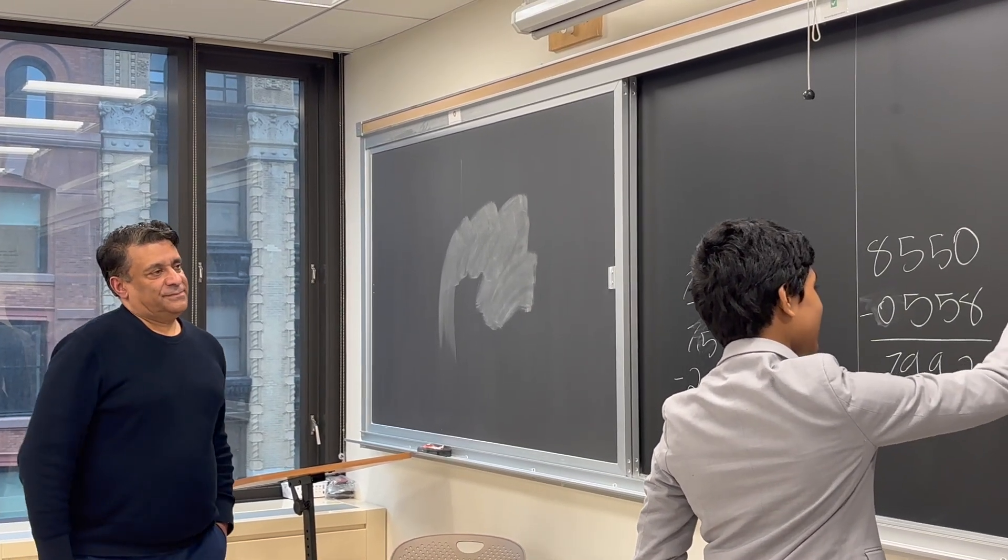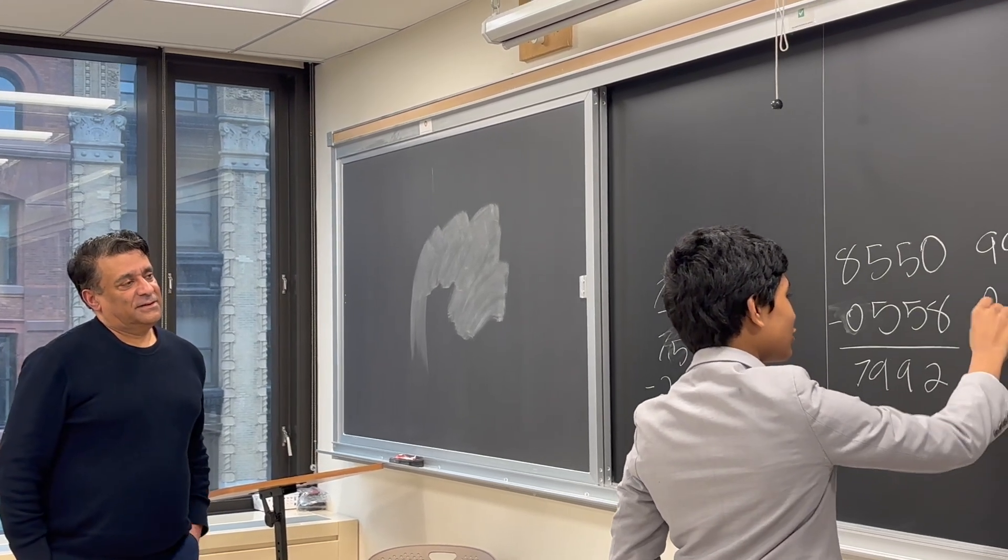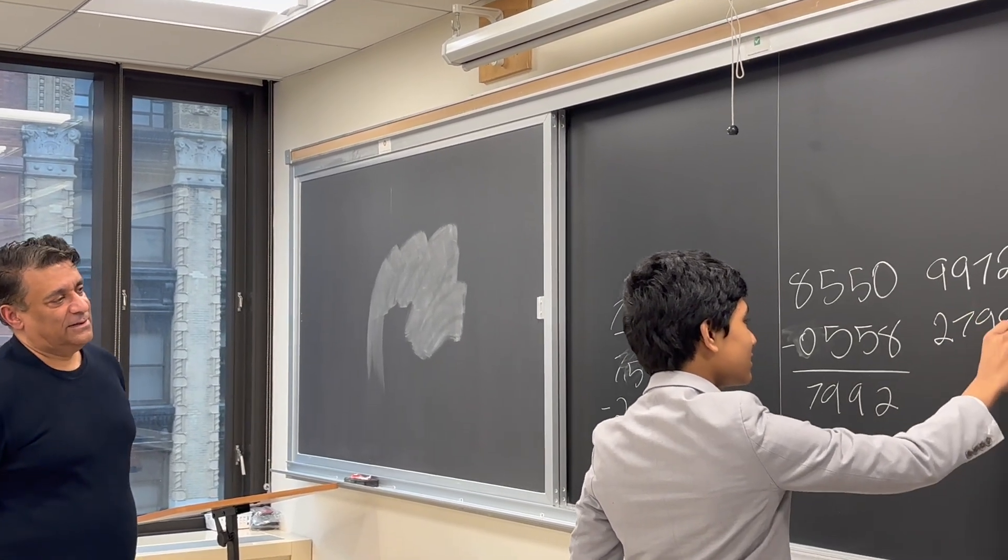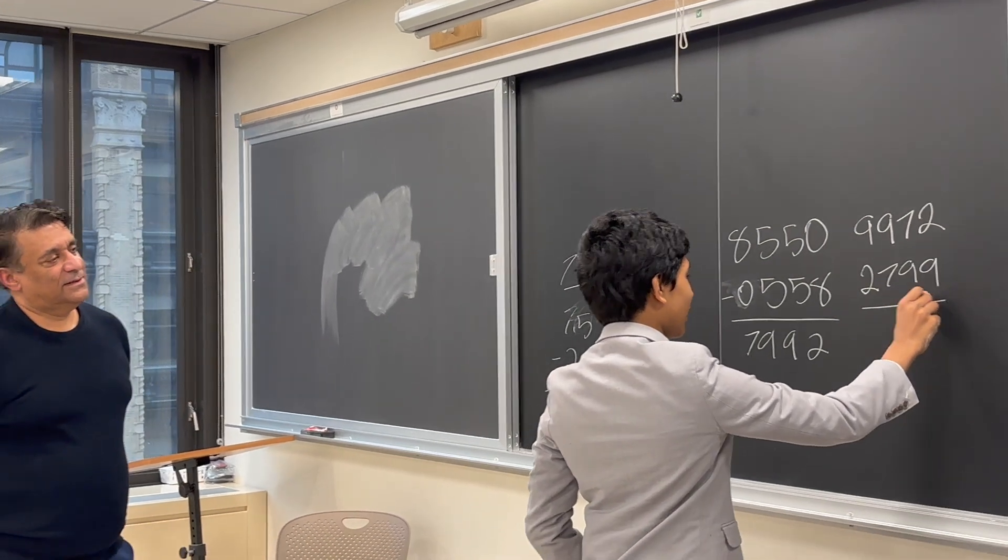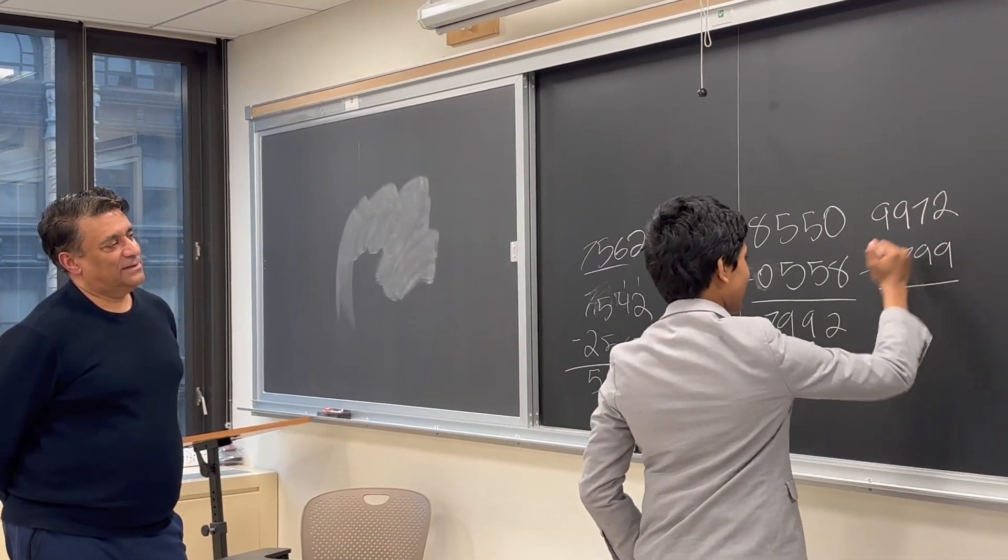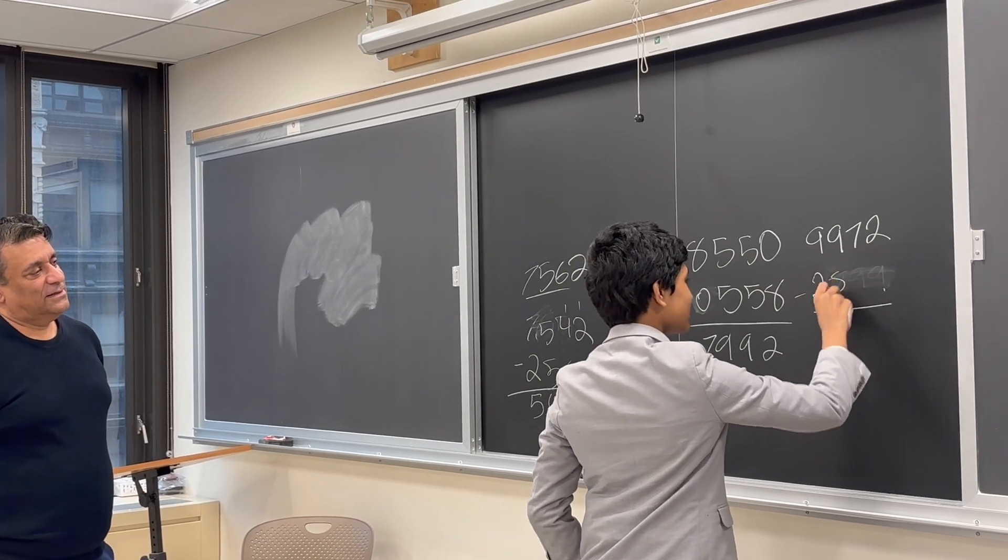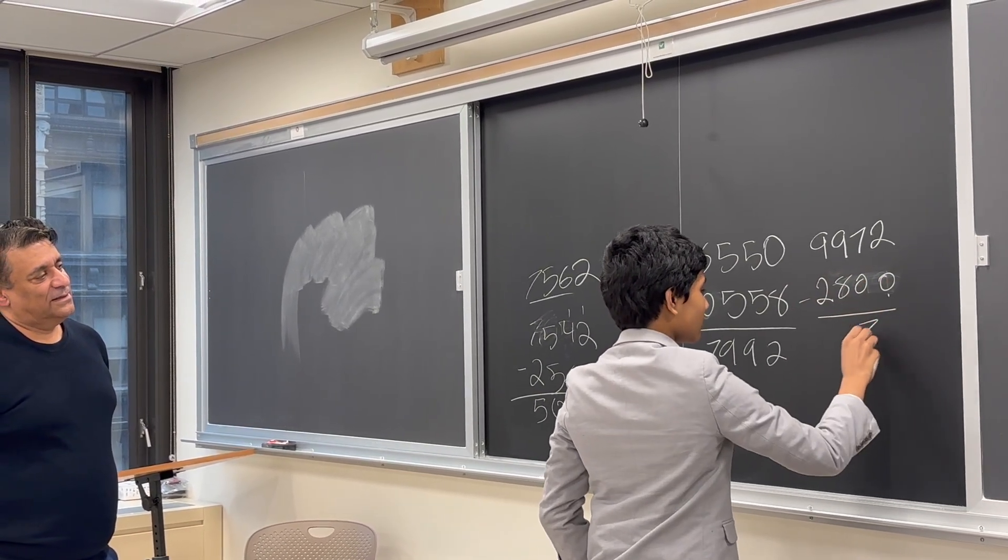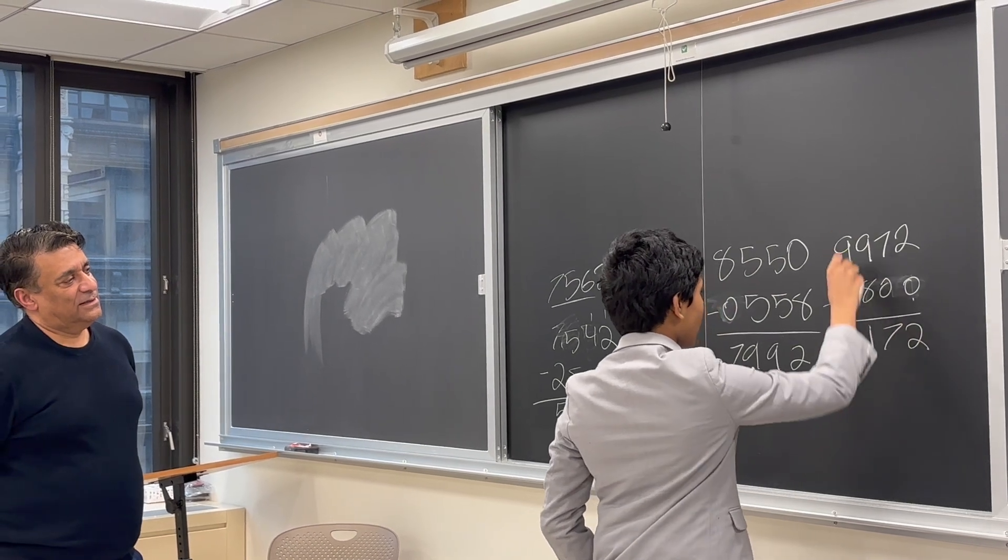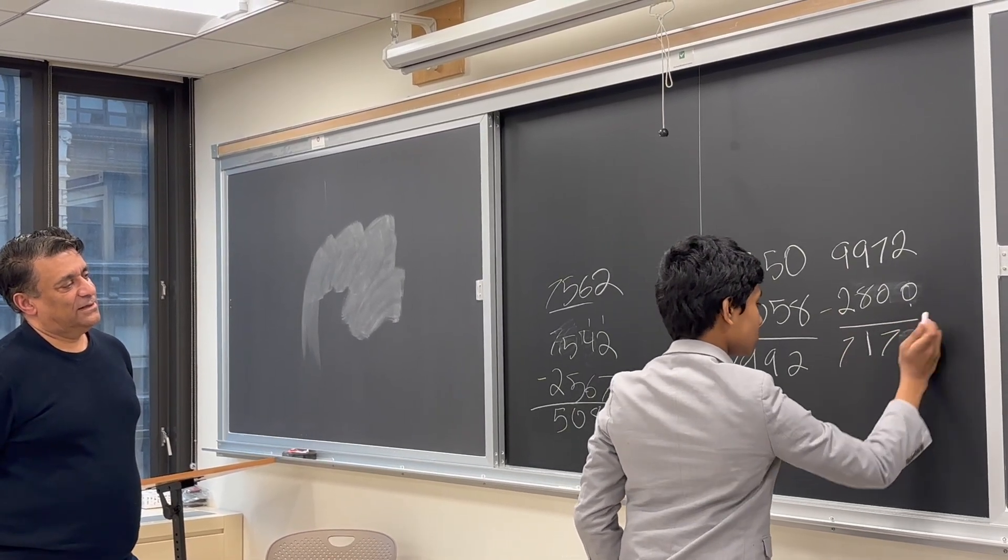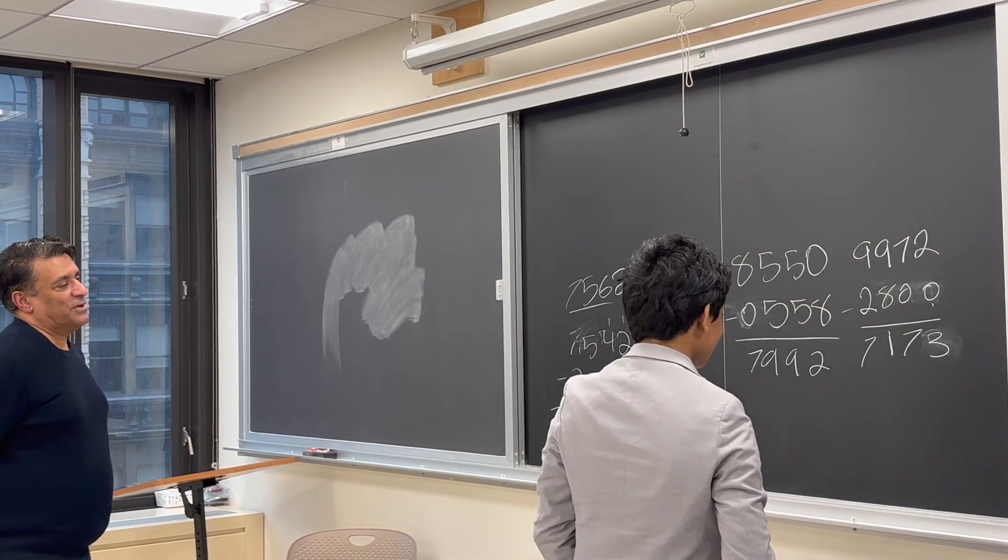And then do the same thing again? I think you can make 9,972, and then 2,799. So I'm just going to say this is 2,800, and then add one at the end. And then add seven. So it's going to be 7,173. Keep going.